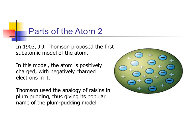The first model that we have, that we didn't really talk about, would have been the hard sphere model. The hard sphere model would have been just that — a spherical thing that would look kind of like a ball with nothing inside of it. That would have been John Dalton's model of the atom.